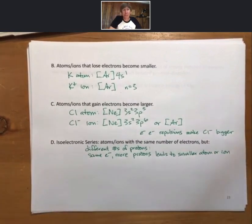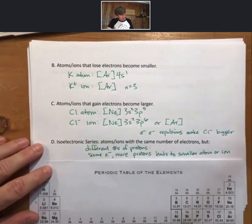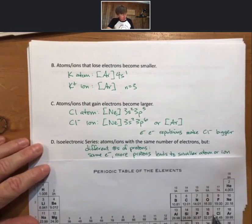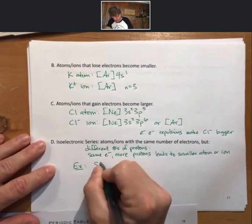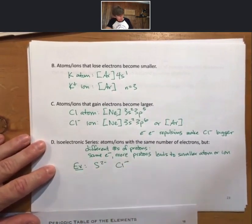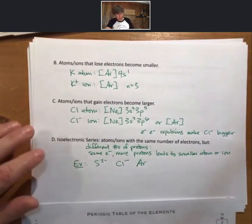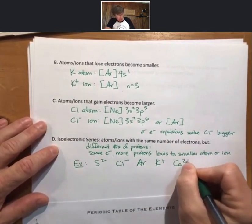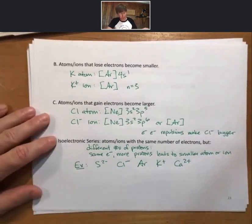And on one level, so much of chemistry can be understood in terms of the positions of positive and negative charges like this. So as an example, we're going to pull sulfur 2 minus, chloride minus, argon, potassium, and calcium 2 plus. This is going to be an isoelectronic series.